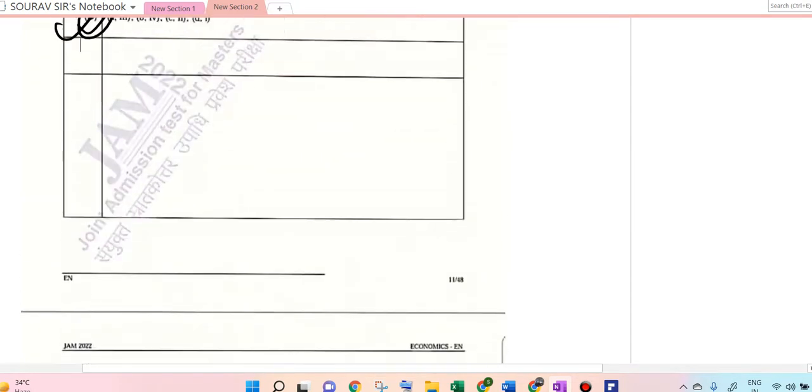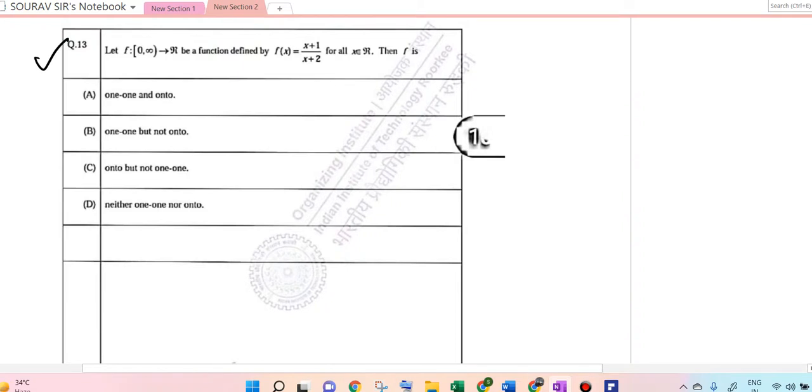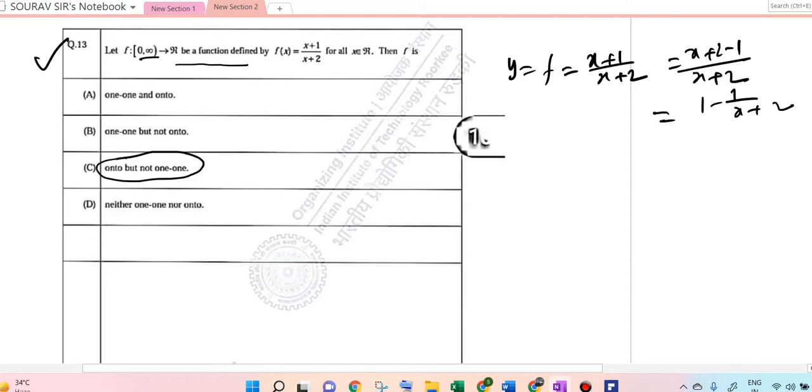Question 13: F is 0 to infinity. If function is defined in this way, then F is 1. Remember that Y = F = (X+1)/(X+2). If you just split it: (X+2-1)/(X+2), this can be written as 1 - 1/(X+2). So this is 1 but not onto. These two options are directly wrong. Now if we split it, 1-Y = 1/(X+2). From this, X = 1/(1-Y) - 2 = (1-2+2Y)/(1-Y) = (2Y-1)/(1-Y).